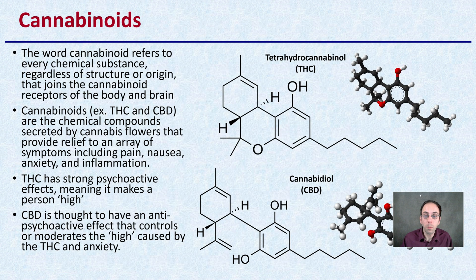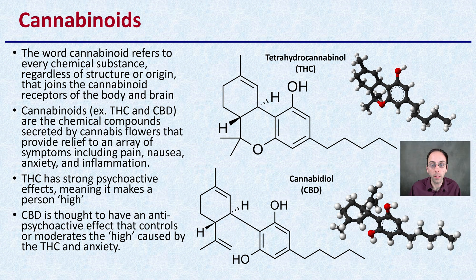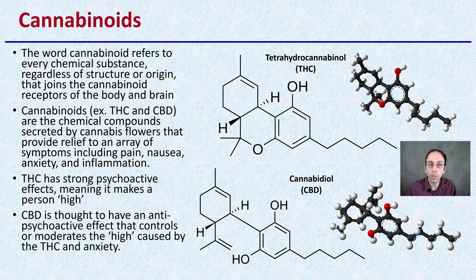The first major category would be cannabinoids. The word cannabinoid refers to every chemical substance, regardless of structure or origin, that joins with cannabinoid receptors in the body and the brain. So while this is thought of to be cannabis exclusive, it's actually not.